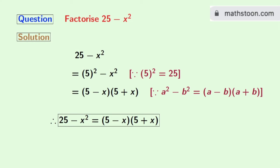And finally, we get 25 minus x squared is equal to 5 minus x times 5 plus x. And this is our final answer.